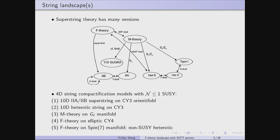If you are interested in 4D compactification models with supersymmetry no greater than N=1, you have the following choices: a 10D type IIB superstring theory on an orientifold, a 10D heterotic string theory on a Calabi-Yau threefold, M-theory on a real seven-dimensional G2 manifold, or F-theory on an elliptic Calabi-Yau fourfold. Those four cases all give rise to 4D N=1 supergravity, while other possibilities like F-theory on a Spin(7) manifold can give non-supersymmetric 4D theory.